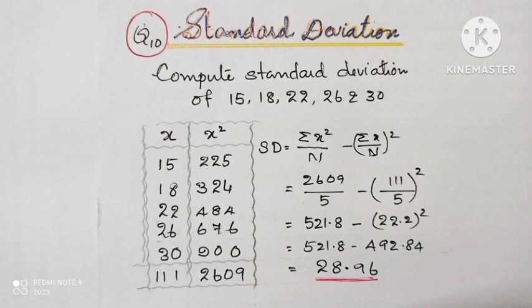Compute standard deviation of the data. We can take the data as x. Standard deviation formula is equal to sigma x squared by n minus sigma x by n the whole squared. First, we have to write the x. After that, next column is x squared. Adding all the numbers and using the formula, we will get the answer 28.96.